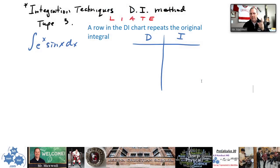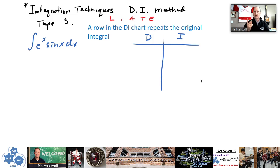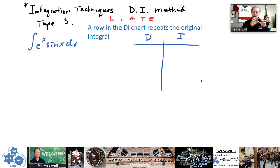DA method type three. We've talked about type one, where the derivative row — if you differentiate and get down to zero, you can stop there on both columns. That is your last row and you're done. You do your diagonal thing, and the zero row is full. Type two is when you keep an eye on the rows, differentiate and integrate, and when you can easily integrate a row, you can stop there and write that as a separate integral. That's type two, which is in a previous lesson.